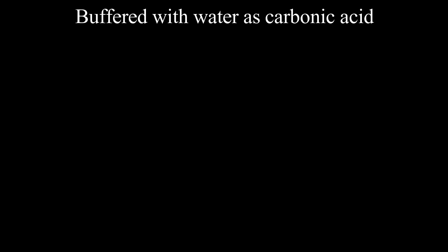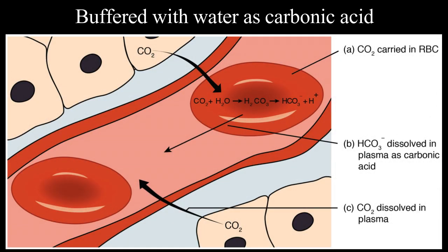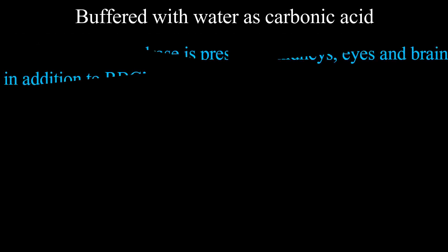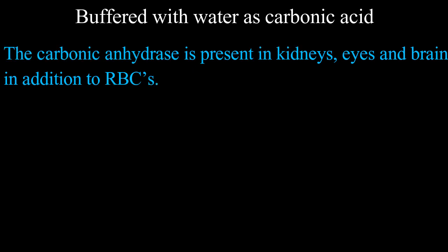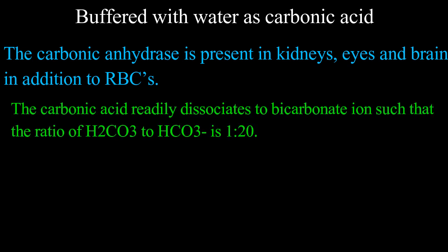Second, buffered with water as carbonic acid. Carbon dioxide combines with water in the presence of carbonic anhydrase from RBCs to produce carbonic acid. Water plus CO2 gives carbonic acid, which readily dissociates into bicarbonate ions and H+ (that is, protons). The carbonic anhydrase is present in kidneys, eyes, and brain in addition to RBCs. The carbonic acid readily dissociates to bicarbonate ions such that the ratio of carbonic acid to bicarbonate ion is 1 to 20.